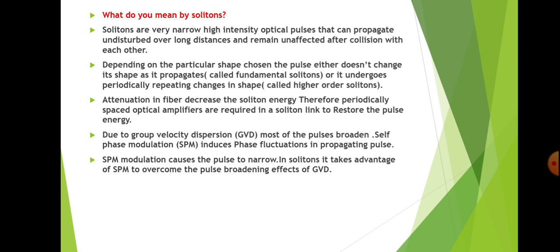In self-phase modulation, the pulse shape changes the refractive index when it is transmitted through the optical fiber. Group velocity dispersion broadens the pulse when it is transmitted through the optical fiber, and self-phase modulation induces phase fluctuations in the propagating pulse. Self-phase modulation causes the pulse to narrow.